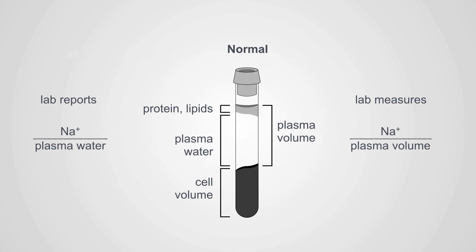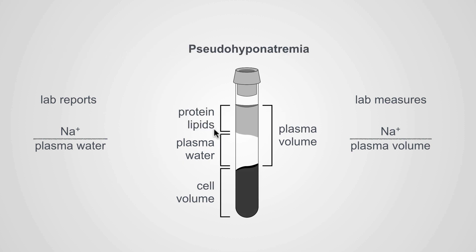Lab measuring equipment will report the sodium content divided by the plasma water, but they actually measure the sodium content divided by the plasma volume. Normally these are very similar — off by about 10% — and an adjustment factor is applied so the reported value is corrected. But if you have an unexpectedly high insoluble fraction — unexpectedly high proteins or lipids in the blood — your plasma water is much smaller than your plasma volume. When they measure sodium over plasma volume, it wildly underestimates the true sodium concentration because the denominator is so much higher than reality.